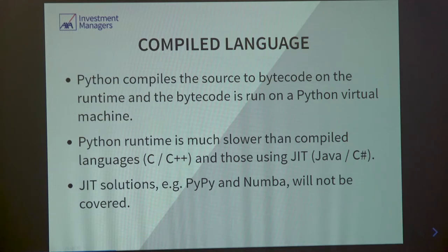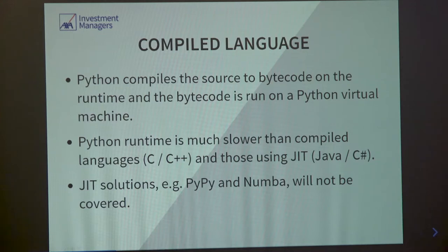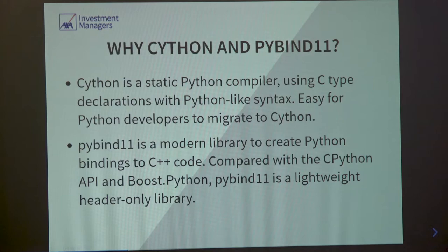Today we are not going to discuss JIT solutions like PyPy or Numba, for two main reasons. One, changing the Python version from CPython to PyPy is sometimes an infrastructure problem — in large-scale corporations you need to escalate to the infrastructure team. Second, JIT doesn't guarantee you always have a performance gain compared to Python or even compiled languages. So why don't we go for the best one?